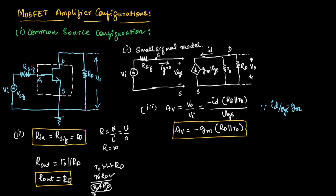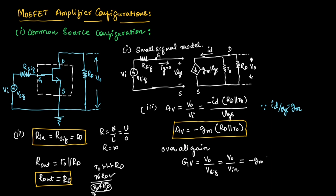This is the expression for gain. We can find one more term which is the overall gain. That is given as GV equal to V_naught divided by V_signal. Since V_signal is equal to Vin, the expression for overall gain will also be equal to minus Gm times (RD parallel with R_naught).